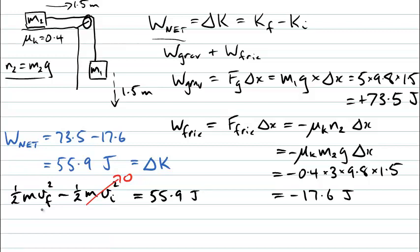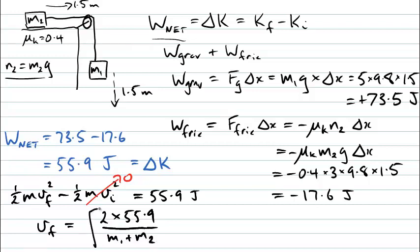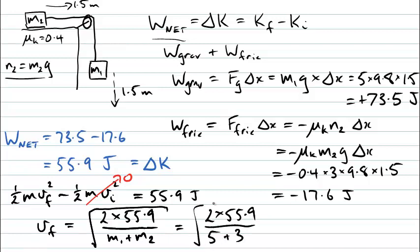The change in kinetic energy is ½mv_f² − ½mv_i². Since the system starts from rest, the initial kinetic energy is zero. So 55.9 joules = ½(m1 + m2)v_f². Rearranging: v_f = √(2 × 55.9 / (5 + 3)) = √(111.8 / 8), which gives a final speed of 3.7 metres per second.